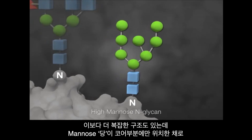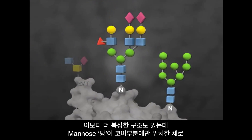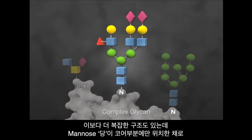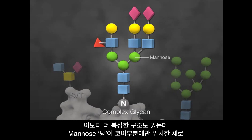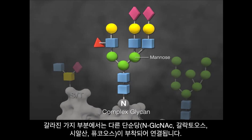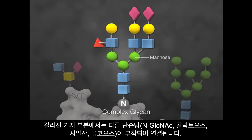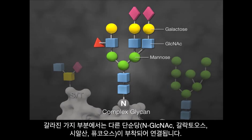N-glycans can also be complex, which means the mannose residues are only present at the core and the branches are extended with other monosaccharides, such as N-acetylglucosamine (GlcNAc), galactose, sialic acid, and fucose.